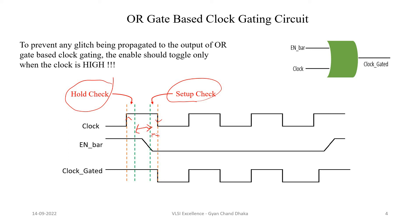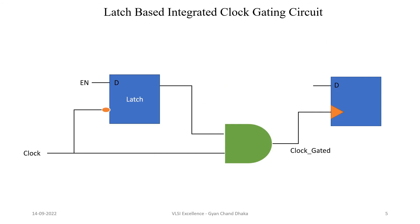Now let's see the timing check for the third type of clock gating circuit, which is the latch based clock gating circuit. Here we have a negative level sensitive latch, which means whenever the clock signal is high, this latch is in a latching state — the latch will latch the input data. So the input data is going to be latched whenever the clock is high. Whenever the clock signal is low, our data will be transparent, meaning whatever is at the input signal will transfer to the output. For a negative level sensitive latch, the rising edge of the clock signal is the latching edge, because after the rising edge, for the time the clock signal is high, the latch is going to be in the latch state.